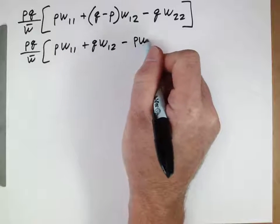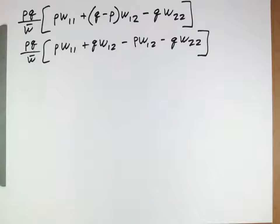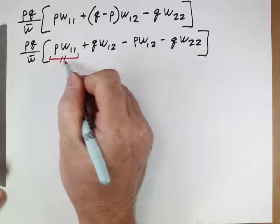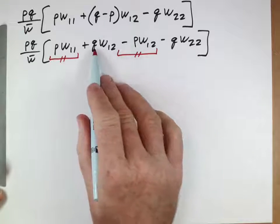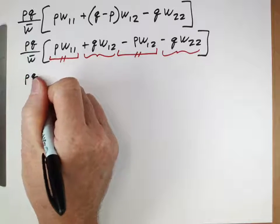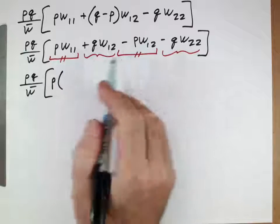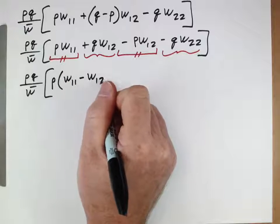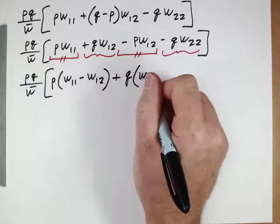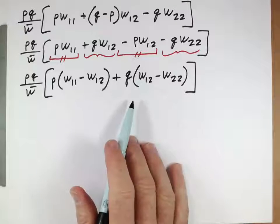We can simplify further by grouping terms with P and terms with Q. Factoring P from the W11 and W12 terms gives P times (W11 minus W12), and factoring Q from the W12 and W22 terms gives Q times (W12 minus W22). This gives the final simplified form of delta P.